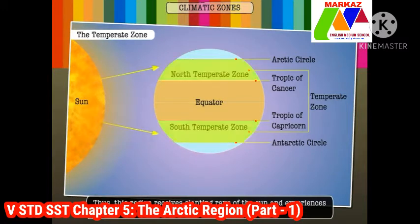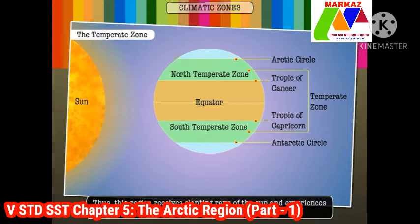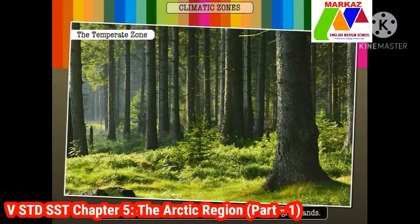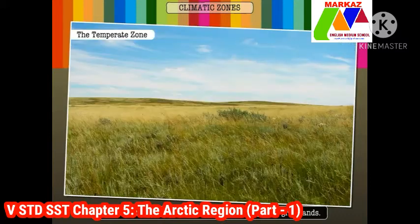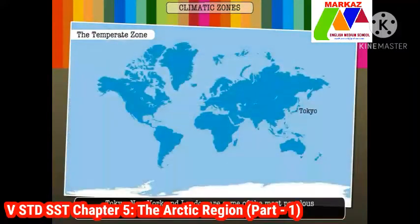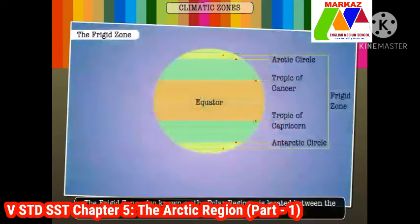The sun does not shine directly over the temperate zone. Thus this region receives slanting rays of the sun and experiences a moderate climate. It is home to many deciduous forests and temperate grasslands. Tokyo, New York, and London are some of the most populous cities found in this zone.